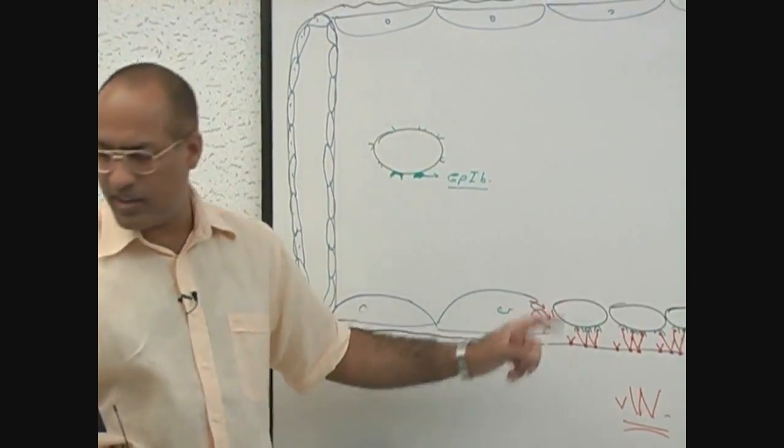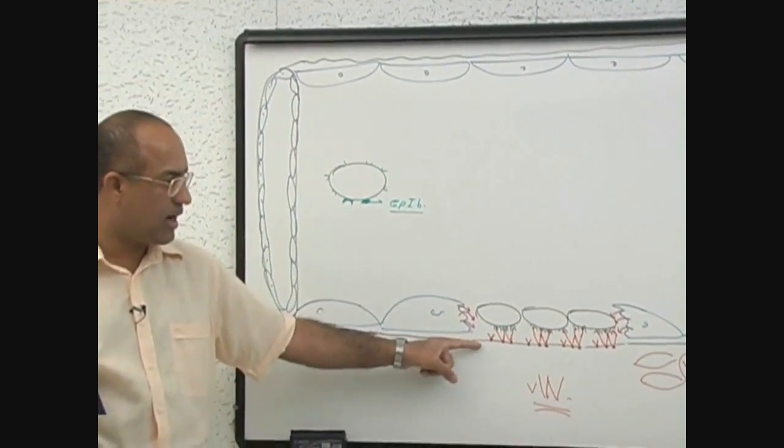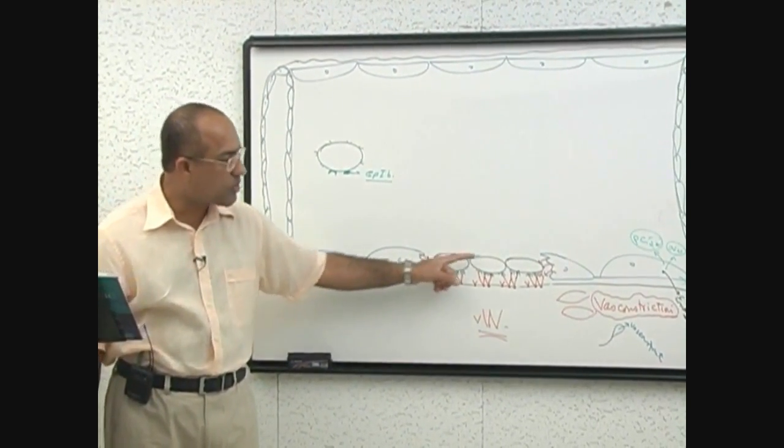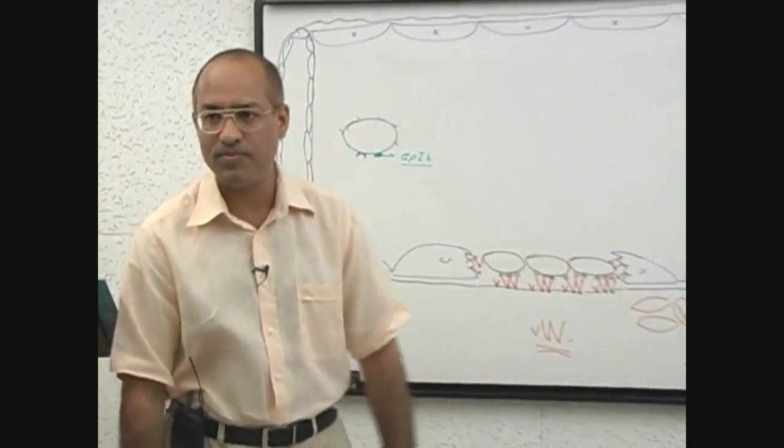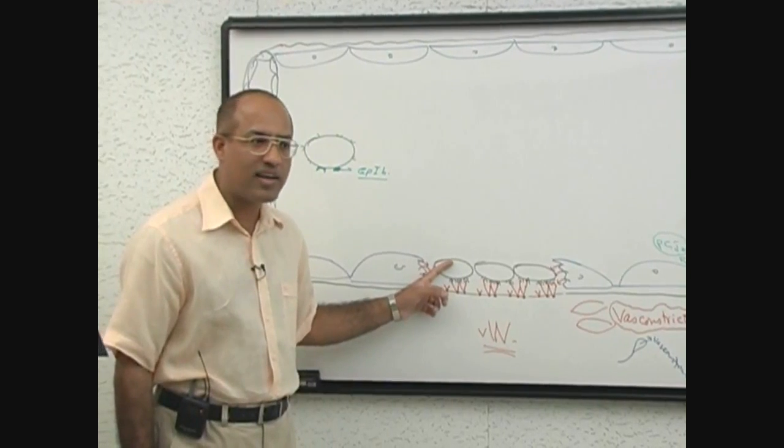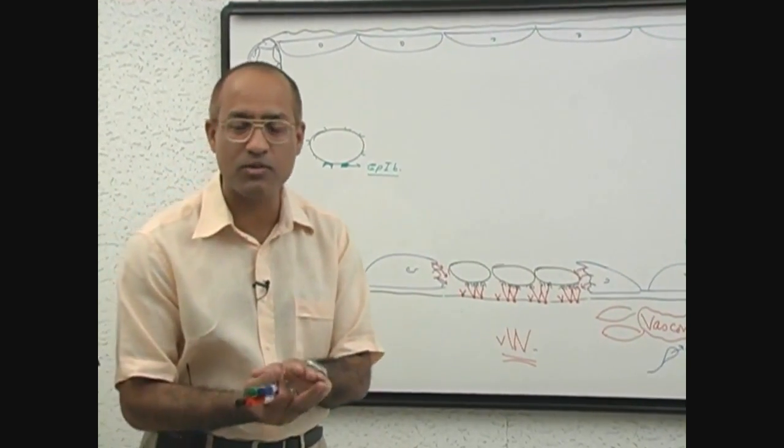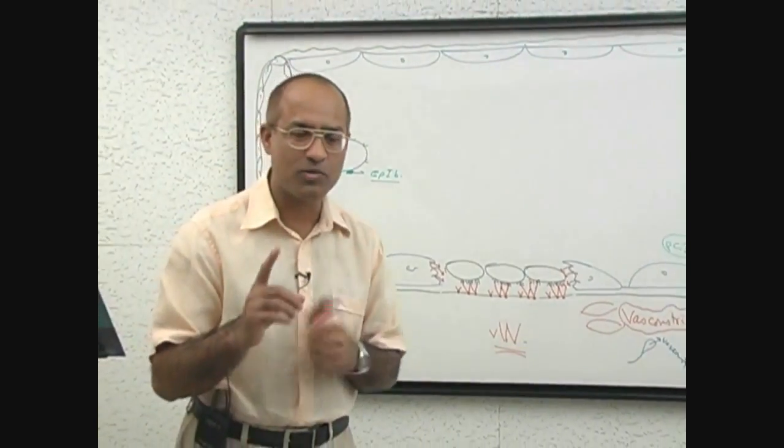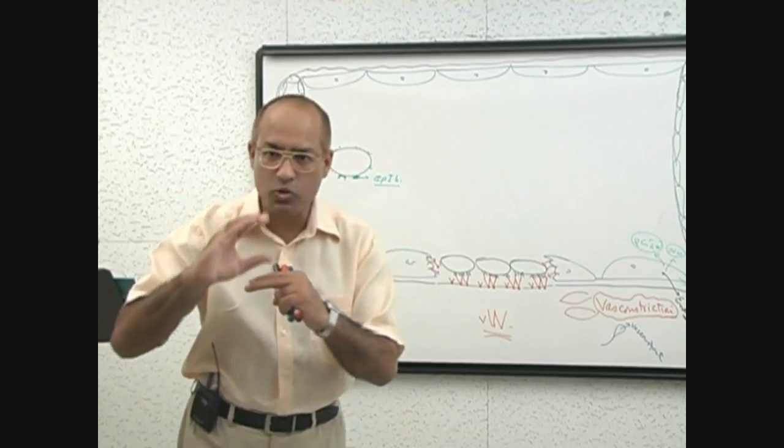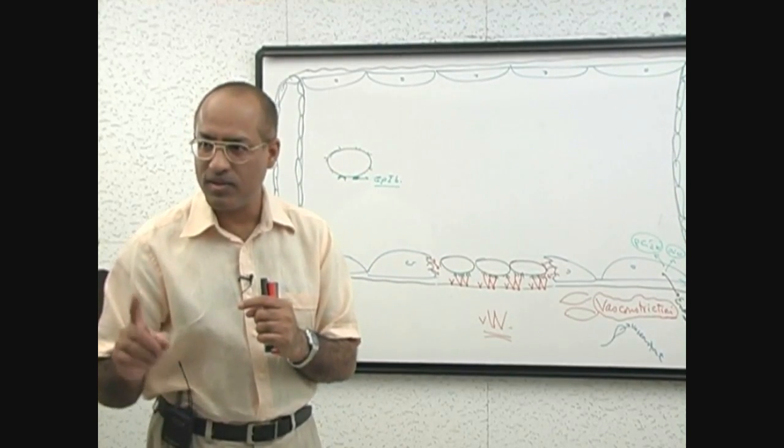This process of adherence of platelets to the injured endothelium or to the injured subendothelial exposed collagen, this process is called platelet adherence. Now how do you define platelet adherence? Platelet adherence is a process in which platelets stick to non-platelet surface, that's it. Platelets stick to some surface which is not platelet. What is platelet adherence? Platelet adherence is a process during which platelets stick to a surface which is non-platelet surface. Am I clear? This is platelet adherence.